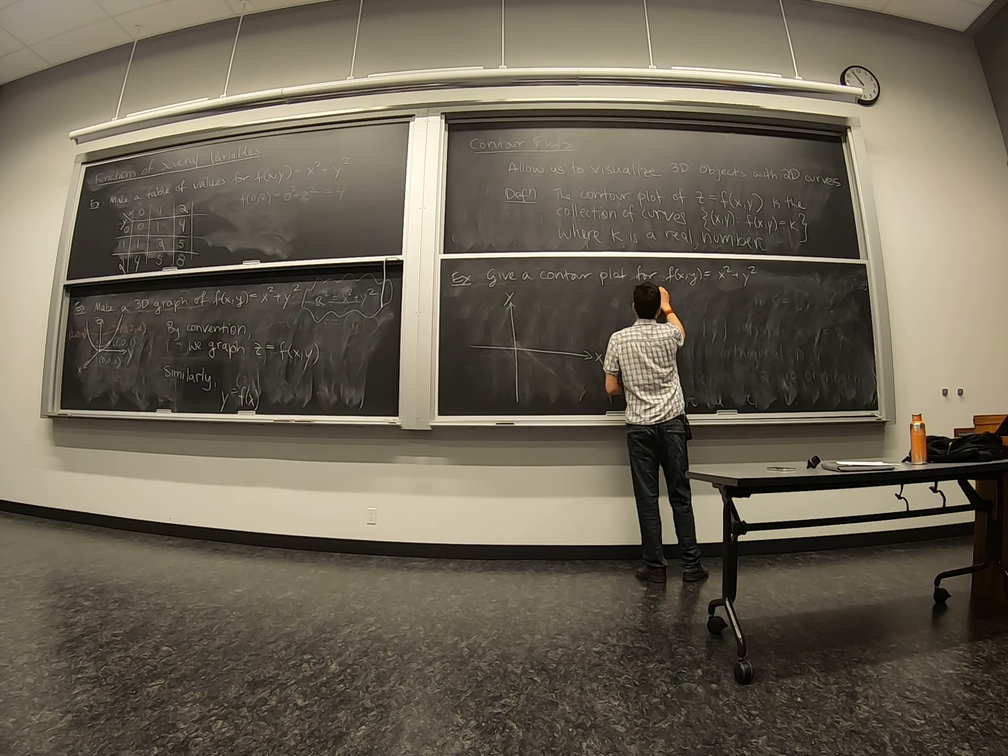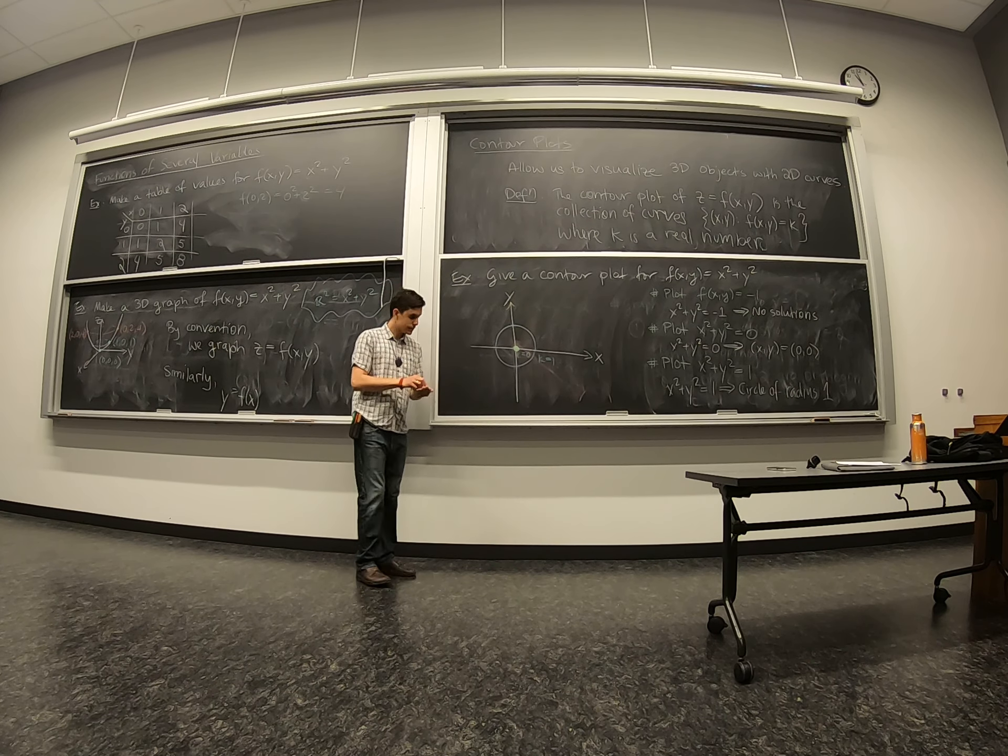Now I'll pick another value. So that'll be a circle of radius one. I add that to my plot. Oh, here we should label that this is the k equals zero guy. The green is k equals zero. The blue is k equals one.